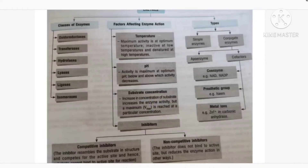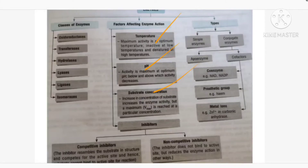The second factor is pH. Optimum pH is needed. Below as well as above the optimum pH, enzyme activity will decrease — the enzyme cannot catalyze the reaction and the metabolic reaction rate comes down.